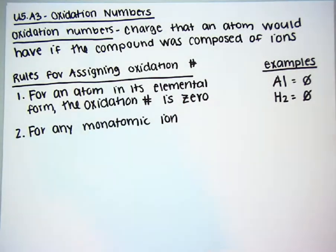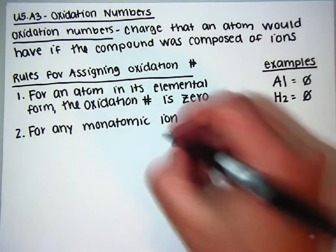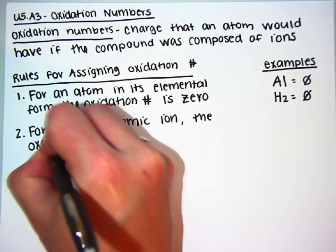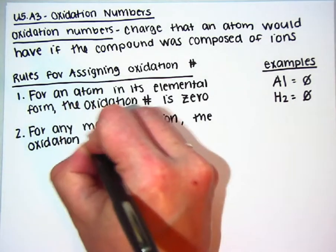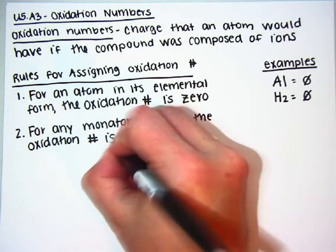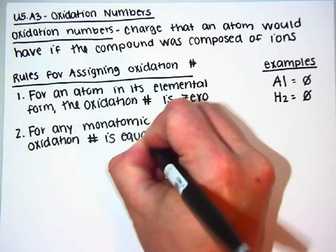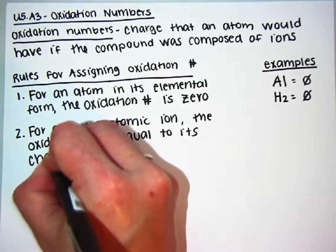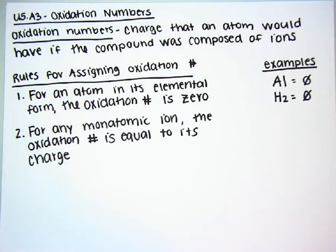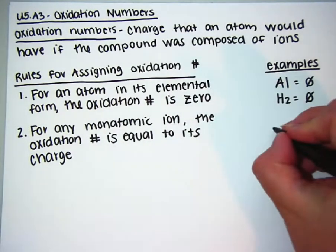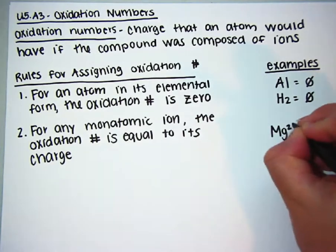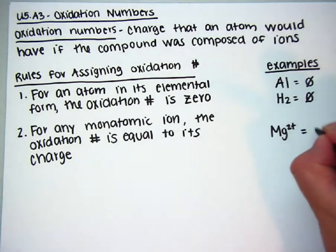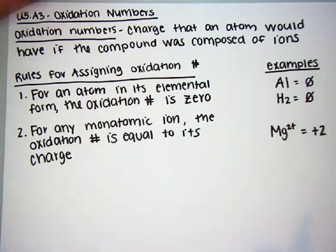Rule number two: for any monatomic ion — mono means one, so just one atom — the oxidation number is equal to its charge. For example, the magnesium ion is monatomic, so its oxidation number is positive two.